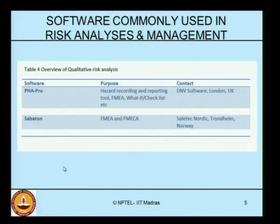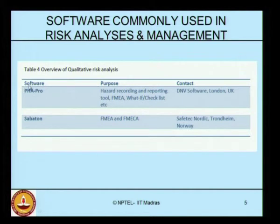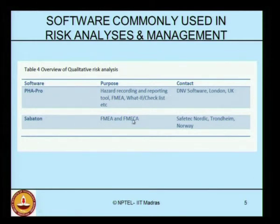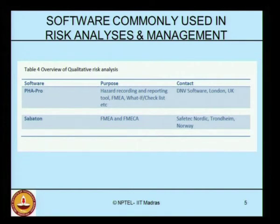Looking at the overview of qualitative risk analysis — as opposed to the quantitative tools discussed so far — the most commonly used software is PHAPRO, developed by DNV UK. It deals with hazard recording and reporting, FMEA, what-if, and checklist analysis. FMEA and FMECA developed by Safe Tech Norway can also be used through Sabaton. The software discussed here are examples of classified software used in academic teaching.